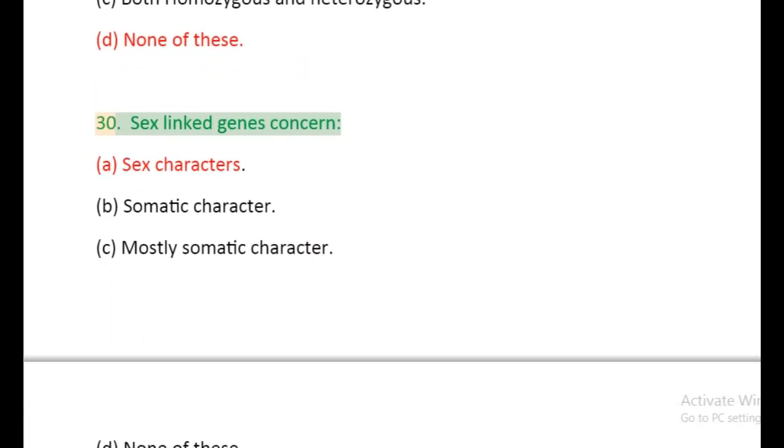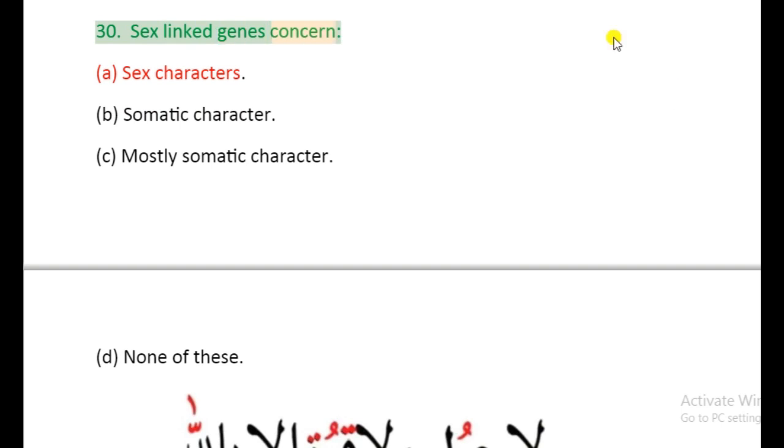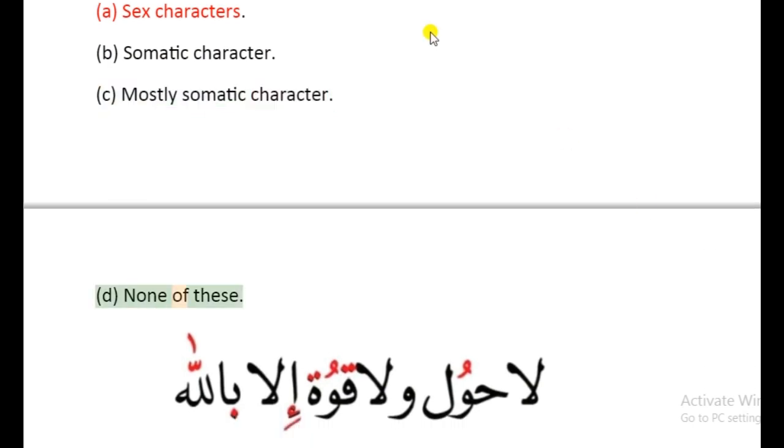Question 30: Sex linked genes concern: (a) Sex characters, (b) Somatic characters, (c) Mostly somatic characters, (d) None of these.